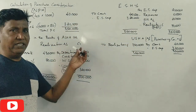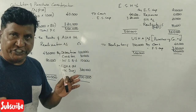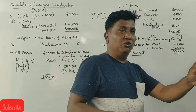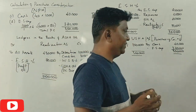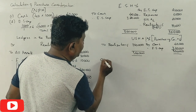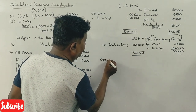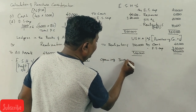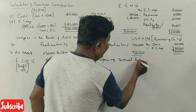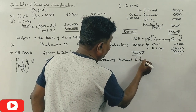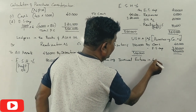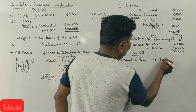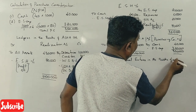The question asks us to prepare ledger accounts in the books of Asha and to pass opening journal entries in the books of Usha. Now let us write the opening journal entries in the books of Usha Limited.